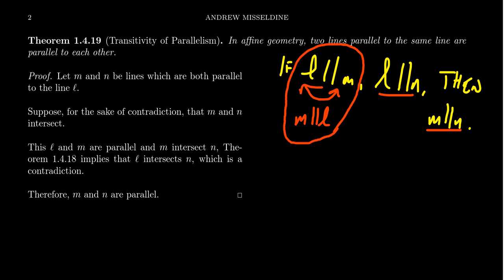By construction, parallelism is also a reflexive relation. Whether parallelism is an equivalence relation depends entirely on whether it's transitive. It turns out it will be transitive only in affine geometry. Transitivity of parallelism is also logically equivalent to the Euclidean parallel postulate inside incidence geometry.